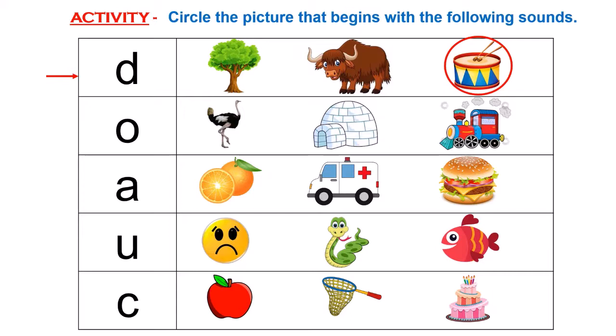Let us go to the next letter. Can you recognize this letter? Is it a circle? No. This is letter O. And the sound O makes is... I have to find and circle the picture that begins with the O sound.